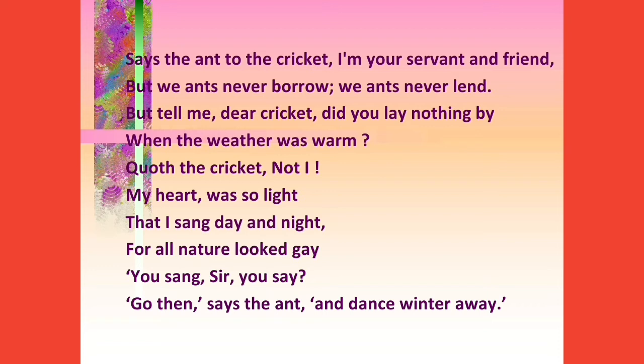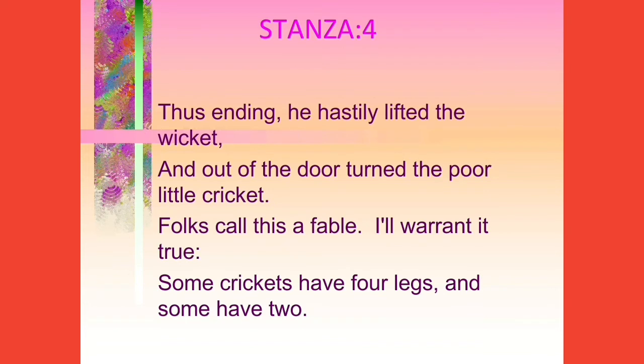Thus ending, he hastily — hastily means hurriedly — lifted the wicket. Lifted means closed; wicket means small door. After saying those things, the ant immediately closed the small door and out of the door turned the poor little cricket. People called this poem a fable, and the poet will warrant it true — meaning the poet is also assuring it is true. Some crickets have four legs and some have two.